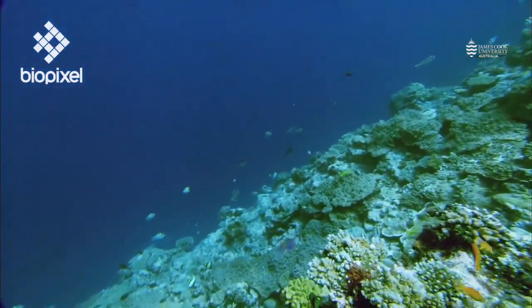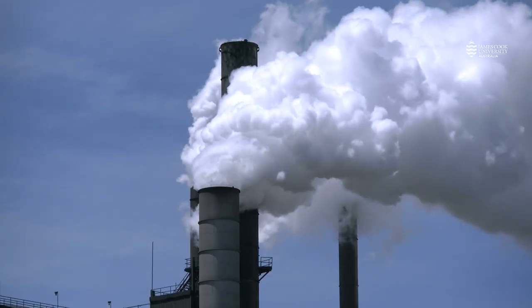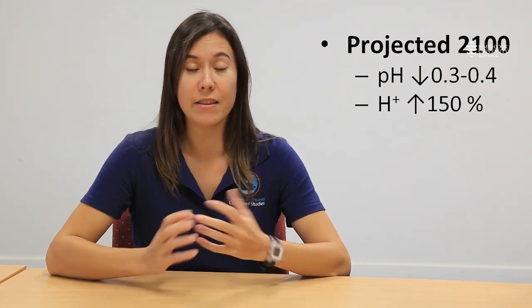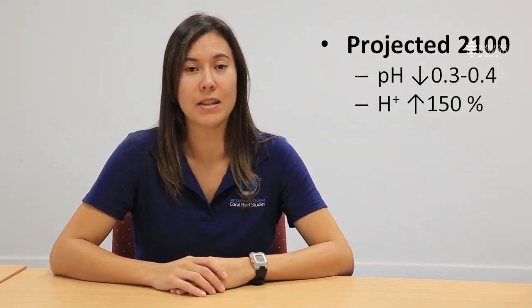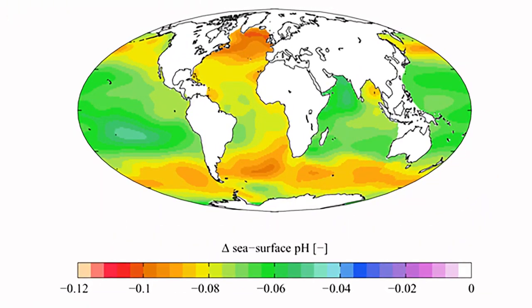If we continue on this path, as we have done for the last 20 or so years, by the end of this century — in just about 80 years' time — we'll see the pH of the oceans fall by 0.3 to 0.4 units. This is equivalent to about a 150% increase in hydrogen ions, or about a 150% increase in acidity. So this is a really big change for marine animals. As you can see from this graph on the right, this shows the areas of the surface ocean that have experienced some of the biggest changes in pH, highlighted in orange and red colours.